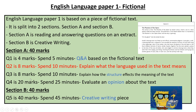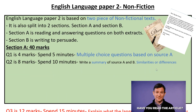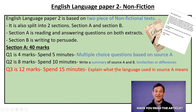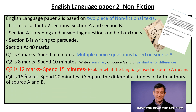To clarify: Language Paper 1 Question 2 asks you to explain what the language used in the text means, and Language Paper 2 Question 3 asks the same thing for Source A. The difference is that in Paper 1 it's 8 marks, whereas in Paper 2 it's 12 marks, so you're expected to write an extra paragraph. Therefore, if you learn to do the language question properly, you can handle both without any problems. Question 4 is a 16-mark question where you're asked to compare the different attitudes of both authors of Source A and Source B, and you're recommended to spend about 20 minutes on this.